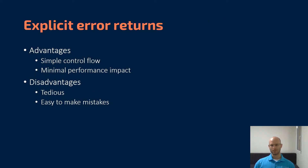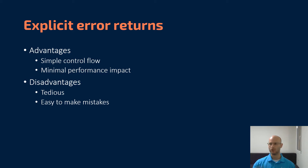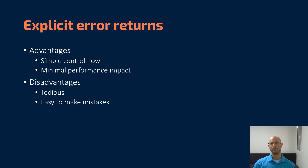Explicit error returns have some advantages. It simplifies control flow — you don't have to worry about your code suddenly doing something unexpected. You call a function, the function returns, and you don't have to worry about an exception being thrown. They tend to have minimal performance impact. On the disadvantages side, they can be quite tedious to work with and add a lot of verbosity to your code. It's very easy to make mistakes by forgetting to check an error or return.